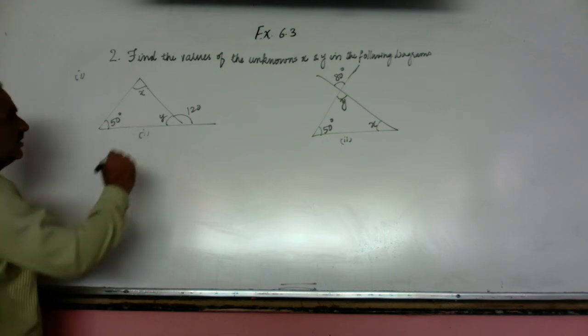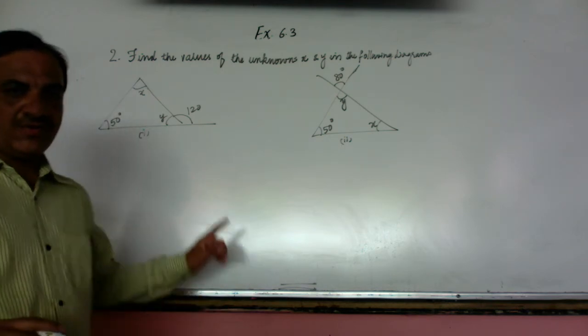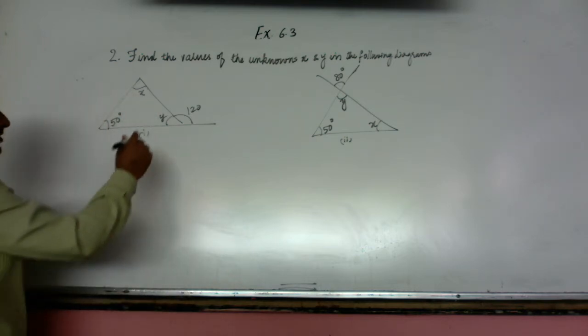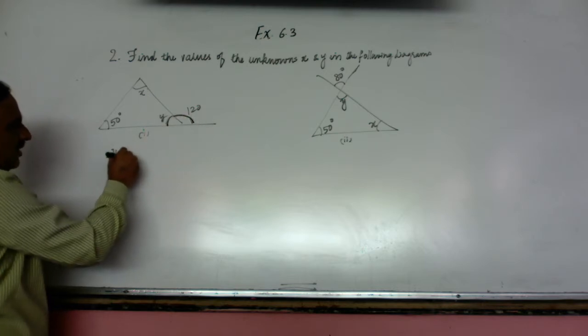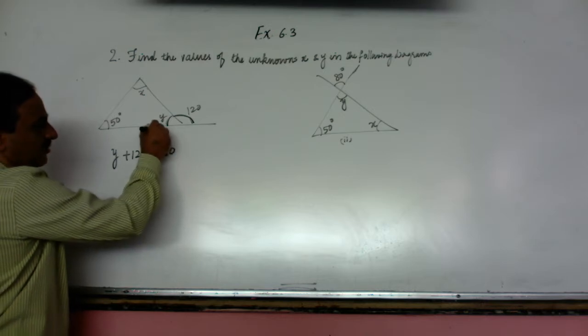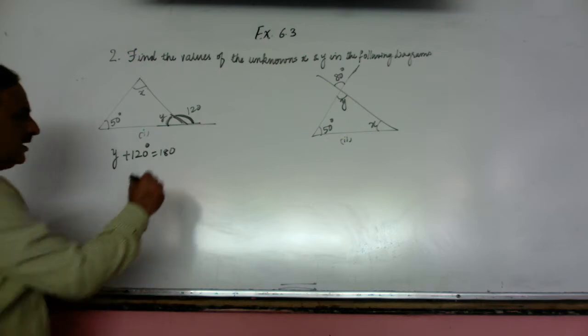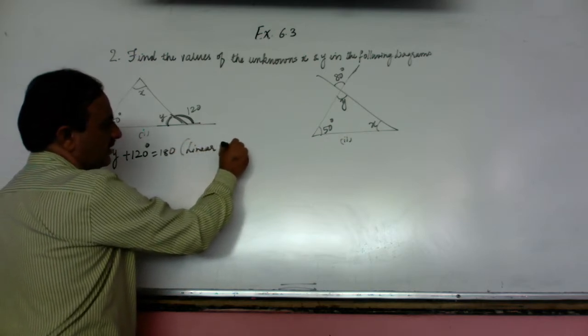This is question number first and this is second of question number second. So these two unknown values we have to find. First we can find the value of y. Y plus 120 degree is equal to 180 degree because we are forming a linear pair. Sum of these two values will be 180 degrees because they are linear pair angles.